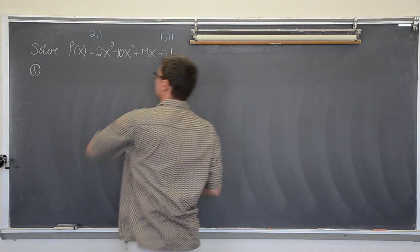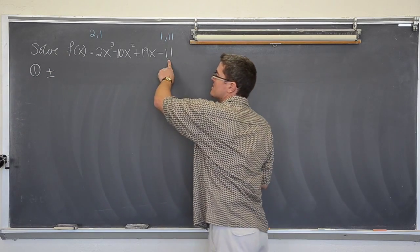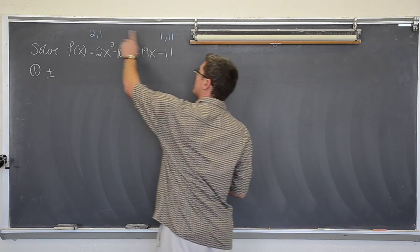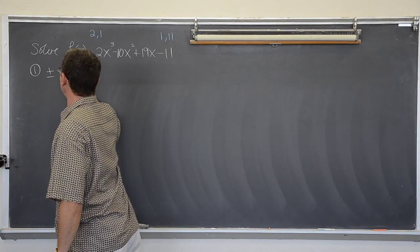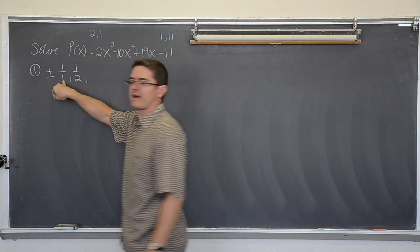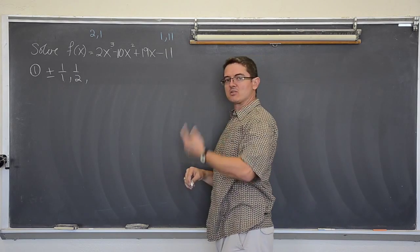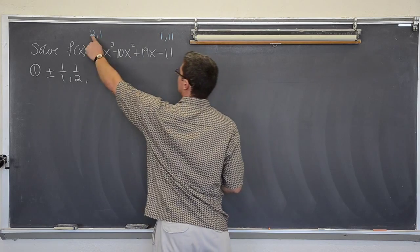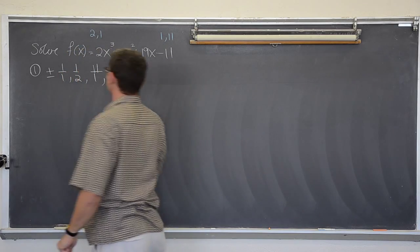That says plus or minus, put all the factors of your constant over your factors of your leading coefficient. So plus or minus 1 over 1 and 1 over 2. Then go to your next factor of your constant, in this case 11, and then again it is 11 over 1 and 11 over 2.